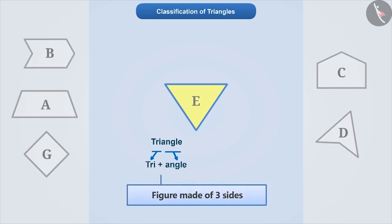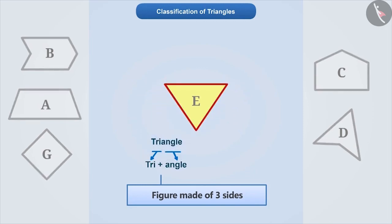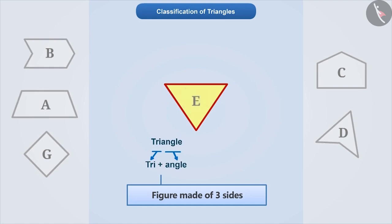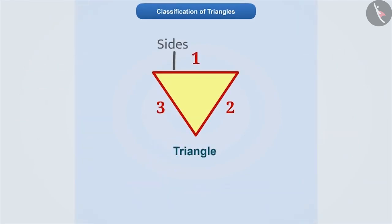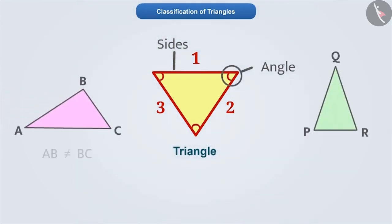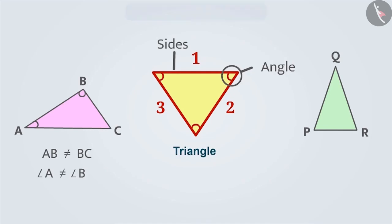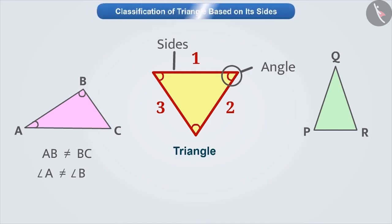which means a figure that is made of three sides. Therefore, we can say that a figure that is made up of three sides is called a triangle. In the given figures, only E is made up of three sides, so only this is a triangle. Along with three sides, a triangle also has three angles. In different triangles, we see that the measures of sides and angles are different. To understand triangles better, we classify them on the basis of their sides and angles. So, let's first learn the classification of triangles based on the sides.